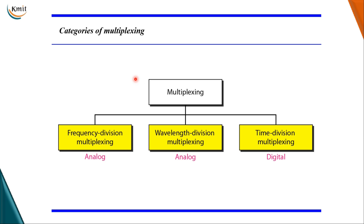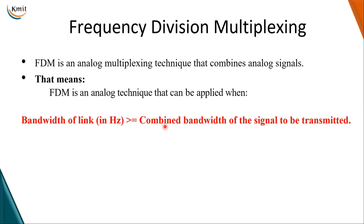Multiplexing is of three types: FDM — frequency division multiplexing, WDM — wavelength division multiplexing, and TDM — time division multiplexing. FDM and WDM are analog techniques, and time division multiplexing is digital.